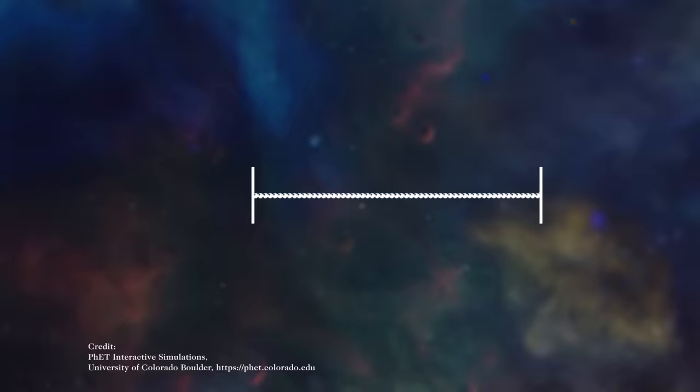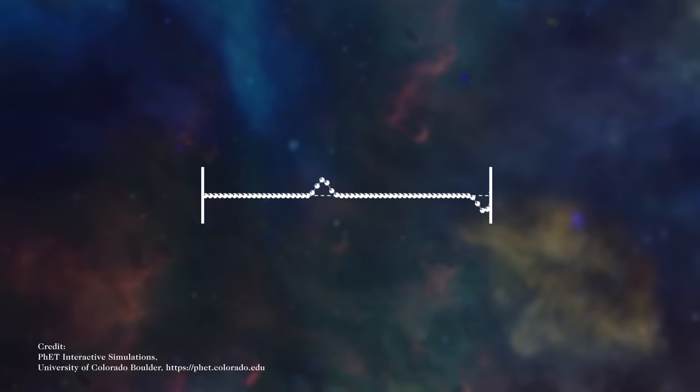The key is that strings can carry waves. And if the string has ends or is tied in a loop, then a wave will end up overlapping with itself. In that case, you get a standing wave.